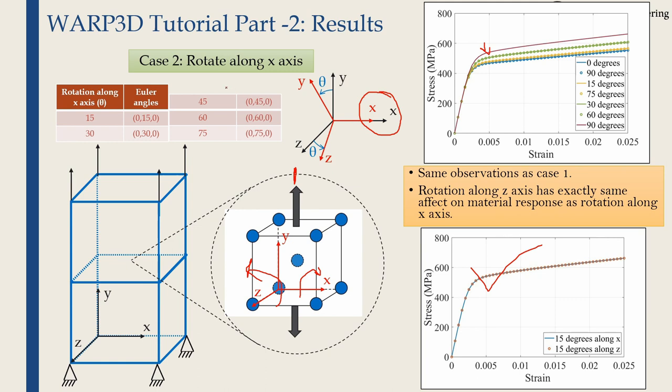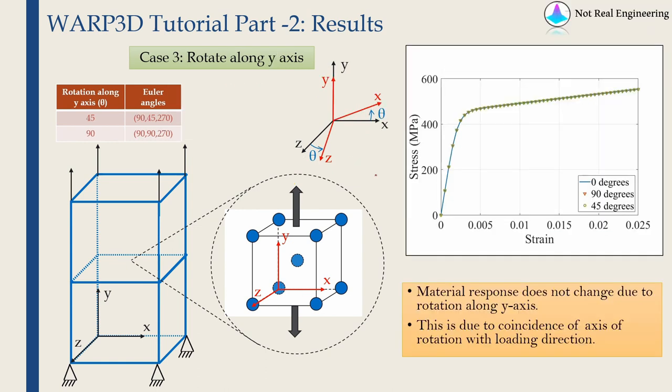Now in the last case, we are going to rotate it along Y direction. Now in this case, the direction of loading is same as the axis along which we are going to rotate the crystal. Therefore, now if you rotate this along this Y-axis and if you are seeing along the direction of loading, you are not going to see any change. Therefore, if you rotate it by 0 degrees or 90 degrees or 45 degrees, you are going to get exactly same stress-strain graph. This is due to coincidence of axis of rotation with loading direction.